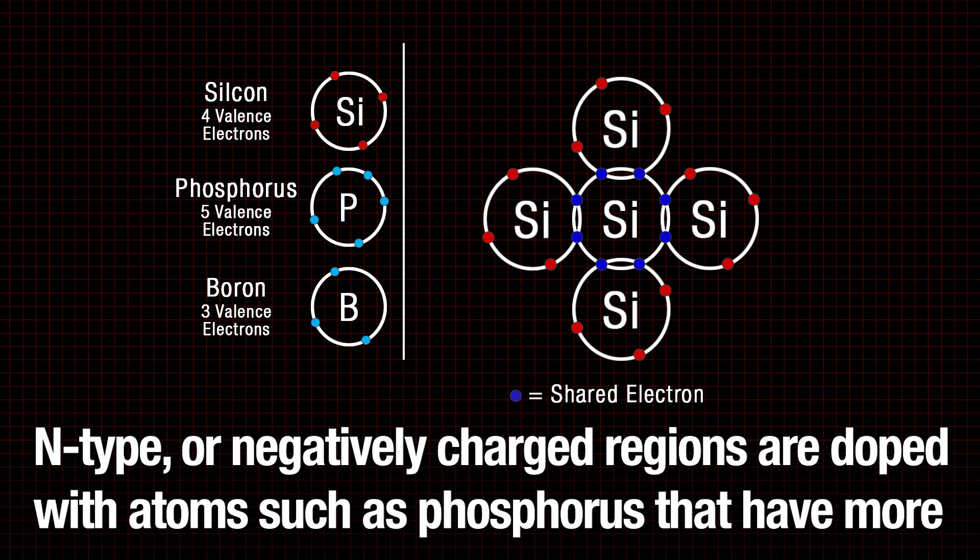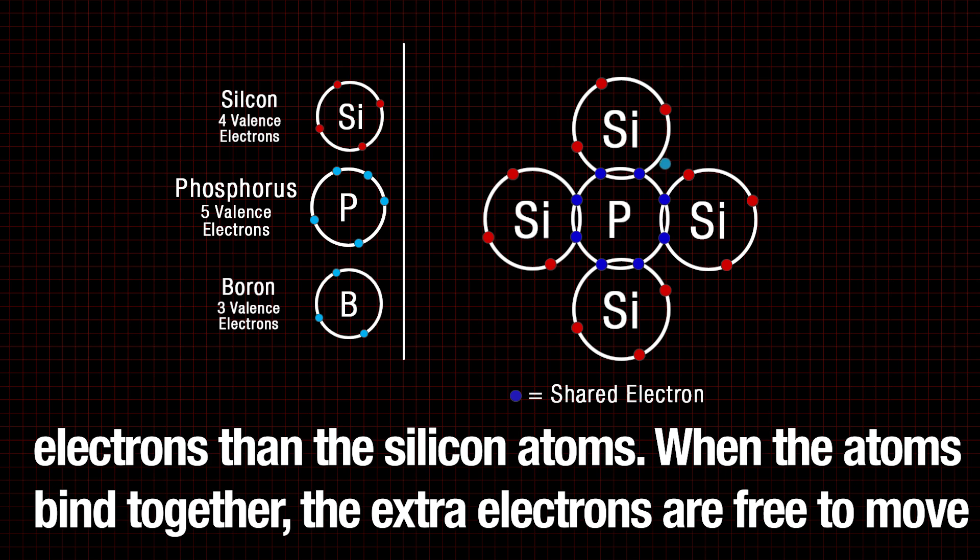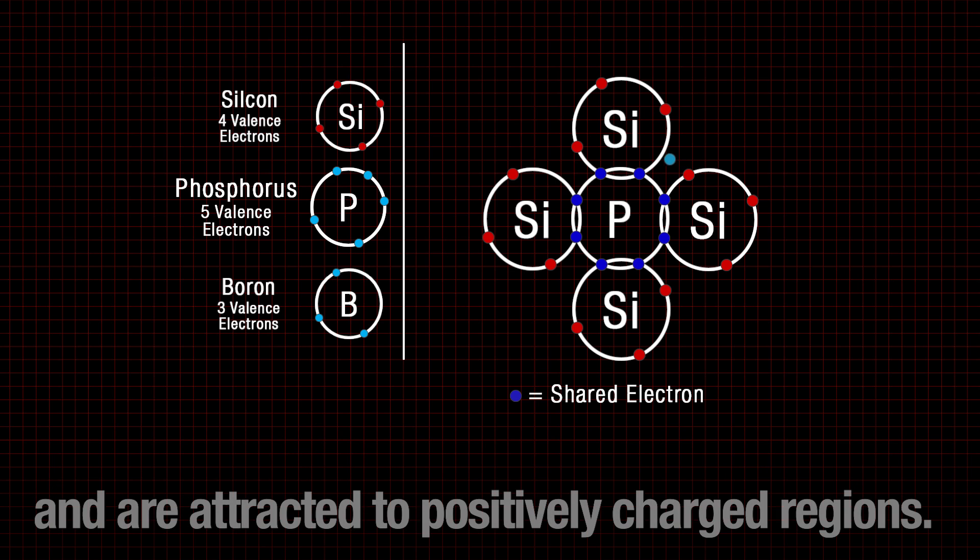N-type or negatively charged regions are doped with atoms such as phosphorus that have more electrons than silicon atoms. When the atoms bind together, the extra electrons are free to move and are attracted to positively charged regions.